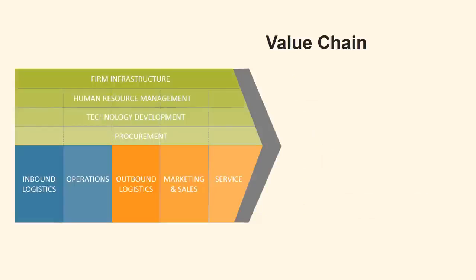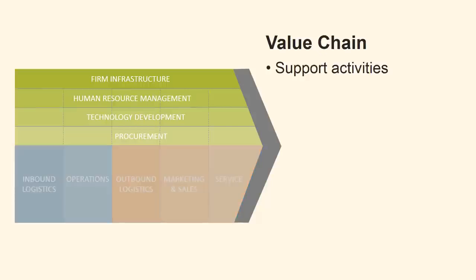These were the five primary activities. We shall now review support activities. Support activities consist of four activities, and they are in the upper part of the model. They consist of procurement, technology development, human resource management, and firm infrastructure. Each of these activities may be described as follows.